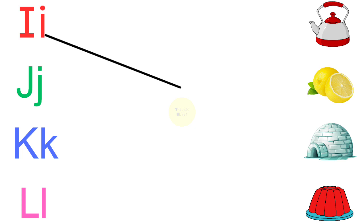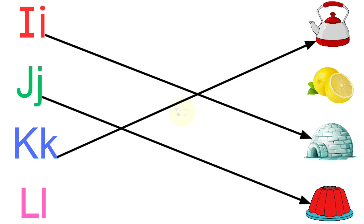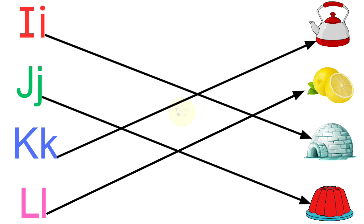I for igloo, J for jelly, K for kettle, L for lemon.